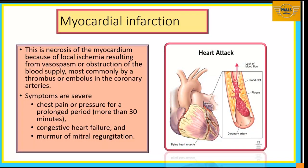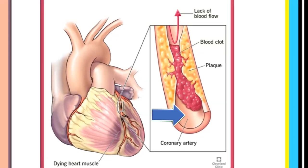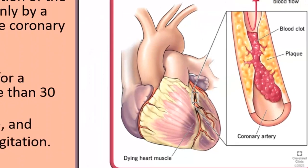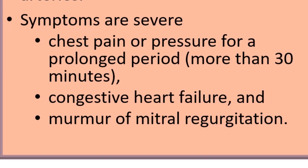We will now consider some clinical correlates, beginning with myocardial infarction — in simple words, a heart attack. It is a necrosis of the myocardium due to local ischemia, loss of oxygen supply, resulting from vasospasm or obstruction of blood supply, most commonly by a thrombus or embolus in the coronary artery. In this view, we see plaques obstructing smooth flow of blood within the coronary artery. Symptoms include chest pain or pressure lasting 30 minutes or more, congestive heart failure, and murmur of mitral regurgitation.